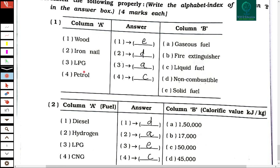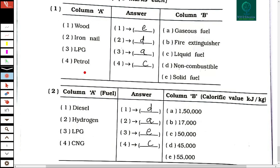Calorific values: diesel is approximately 55,000 kJ/kg, hydrogen is 150,000 kJ/kg, LPG is approximately 55,000 kJ/kg, and CNG is approximately 50,000 kJ/kg.